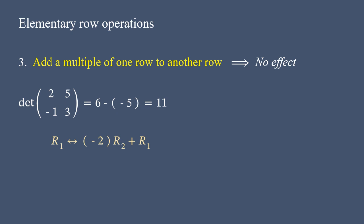We get a matrix where the first row is recalculated after the elementary row operation considered, while the second row remains the same. The determinant of the resulted matrix is 11, and is the same as the determinant of original matrix. Notably, no effect at all.